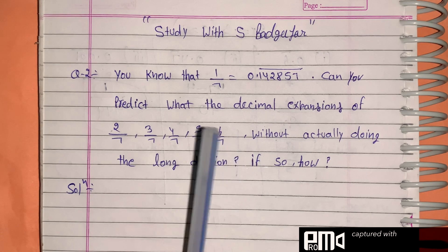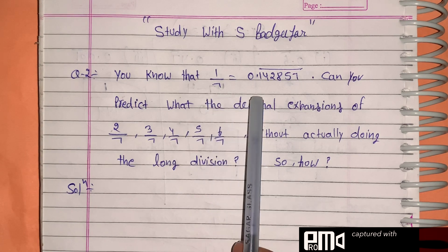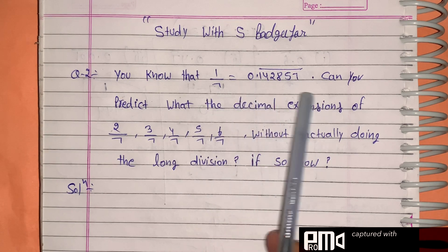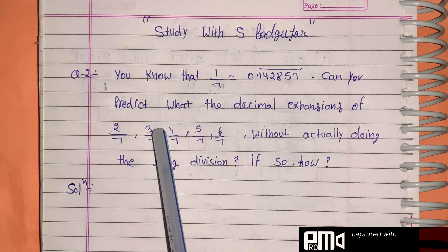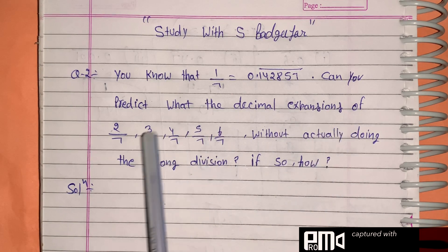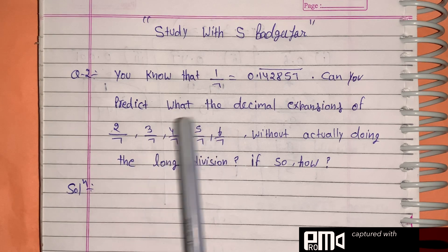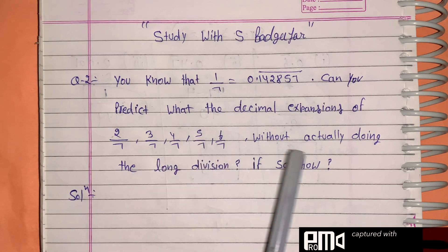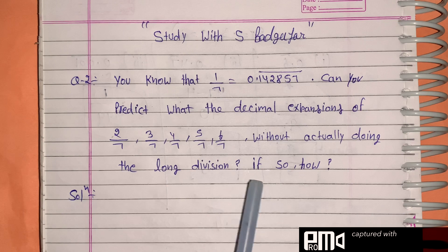The question says: You know that 1/7 is equal to 0.142857 repeating. Can you predict what is the decimal expansion of 2/7, 3/7, 4/7, 5/7, and 6/7 without actually doing the long division? If so, how?